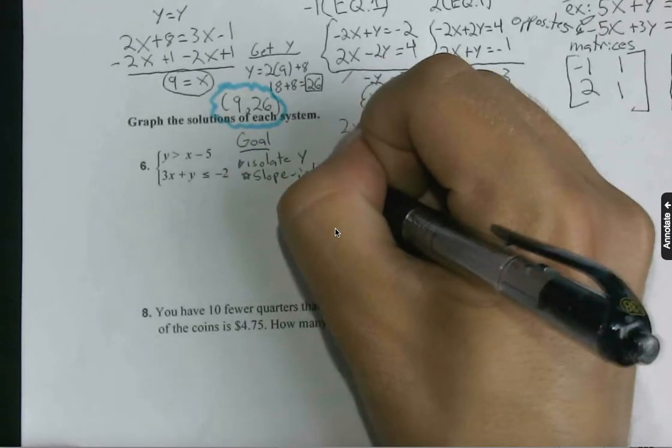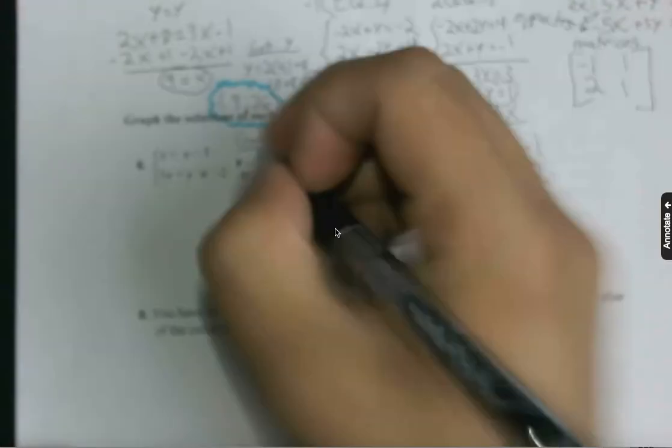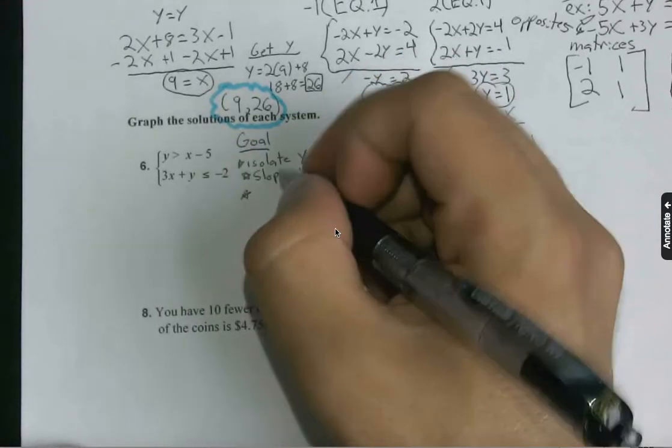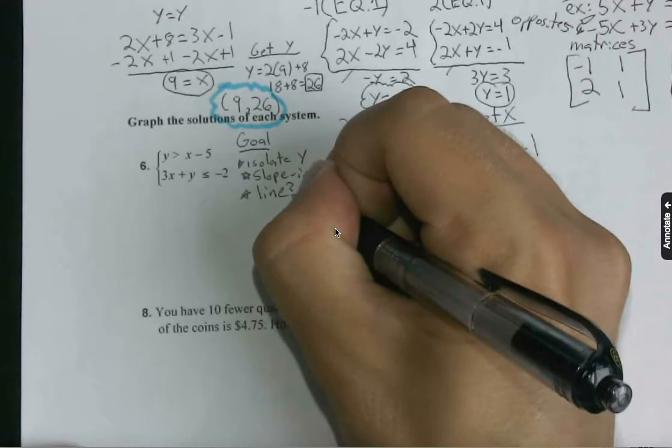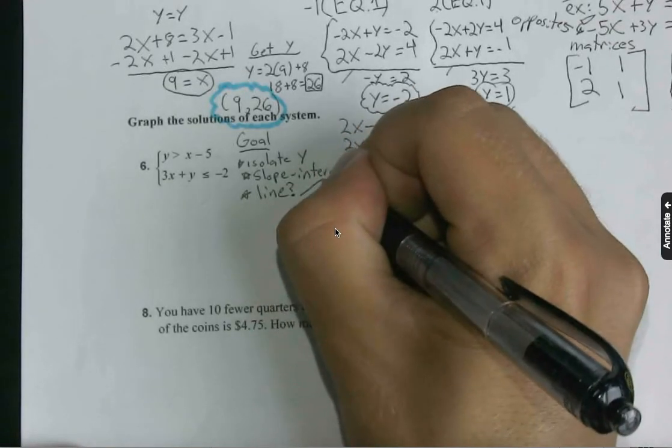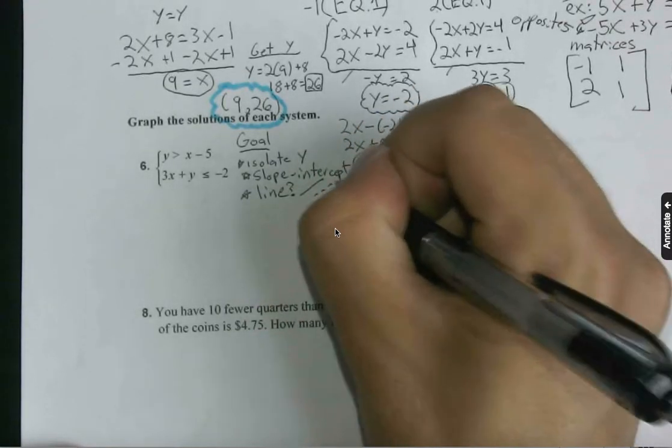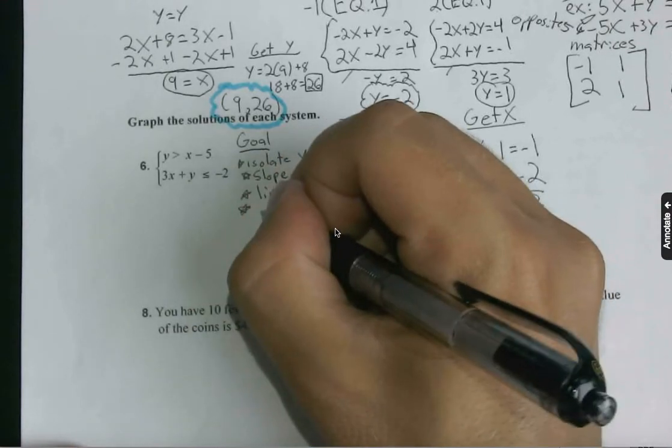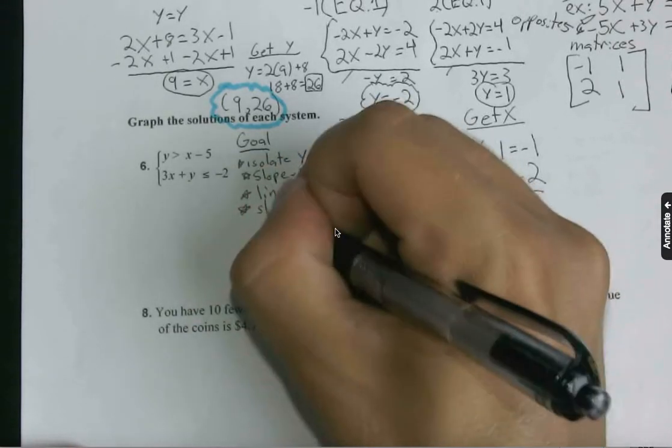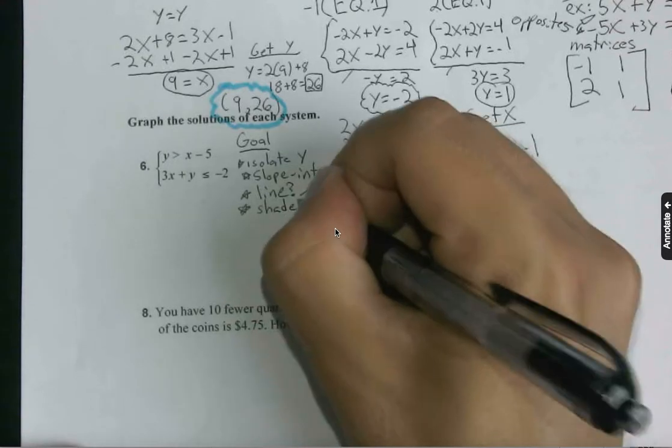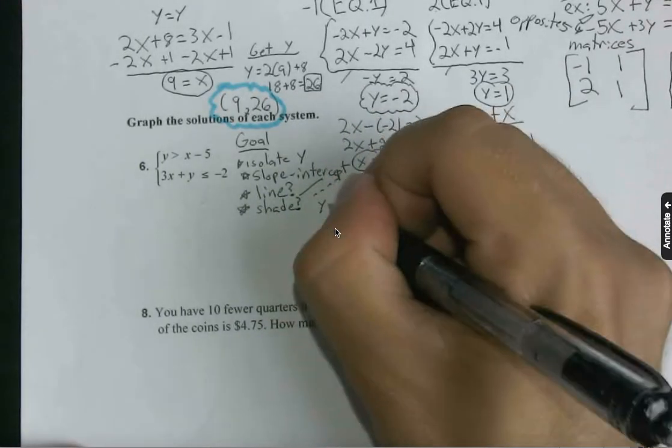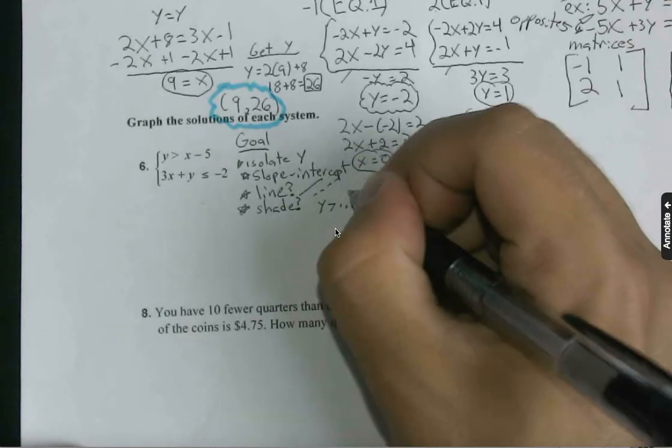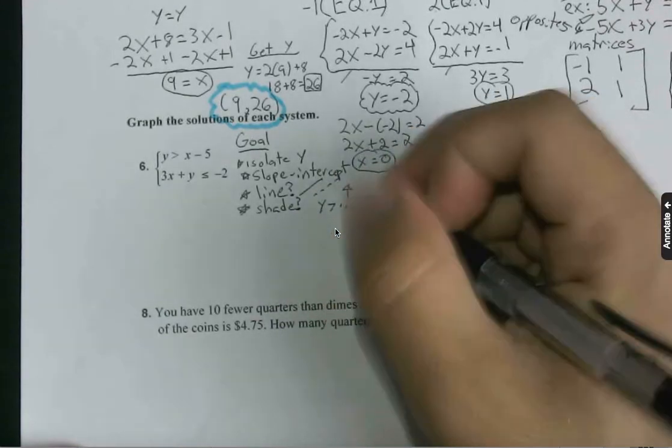You should also be able to determine pretty easily the type of line you're using. Is it going to be solid or is it going to be dashed? In addition to that, are you going to be shading above or below? Of course, if y is greater than some equation, you'll be shading above the line, whereas if y is less than some equation, you're shading below the line.